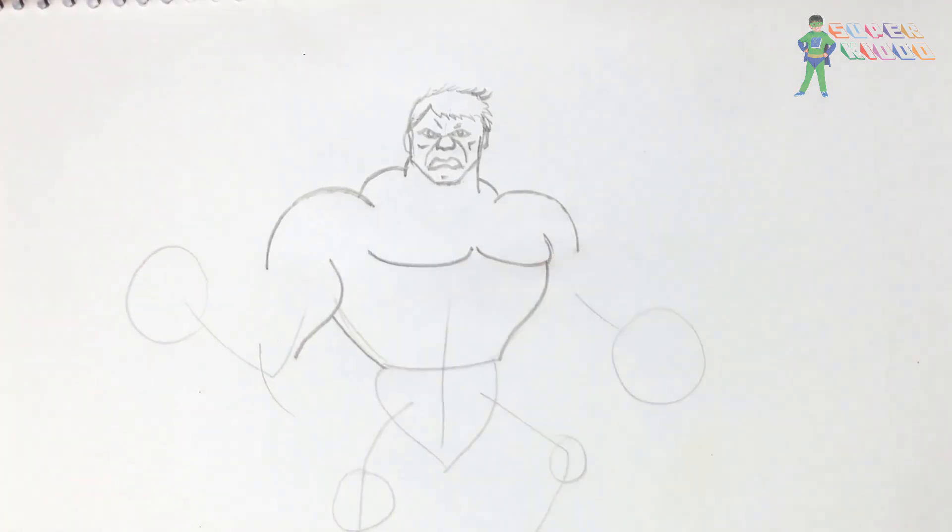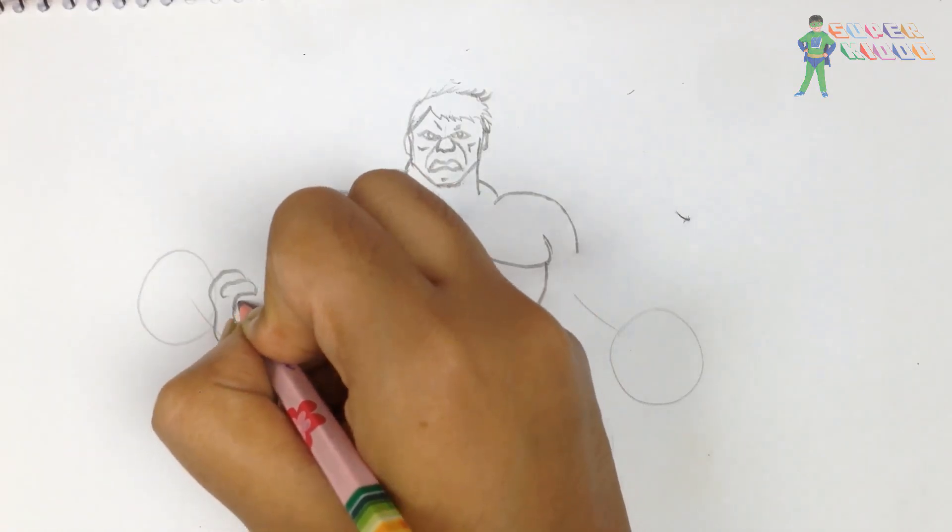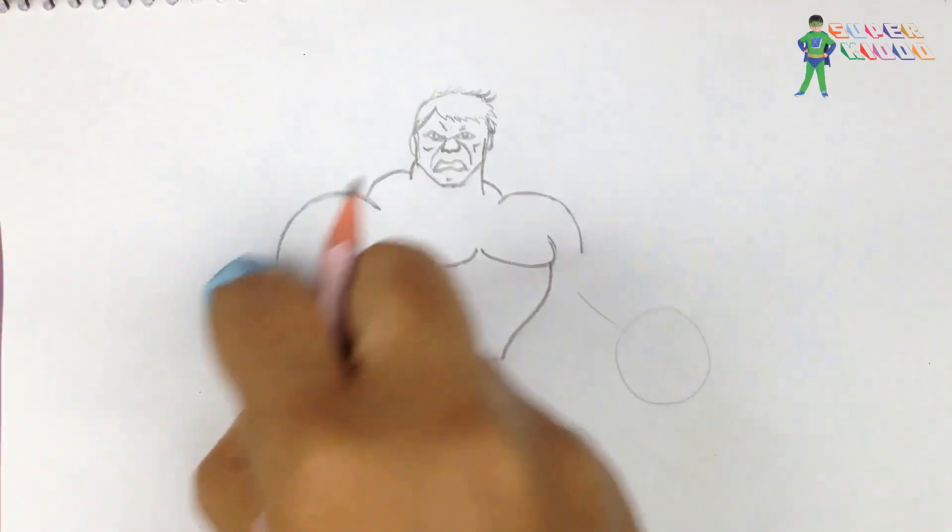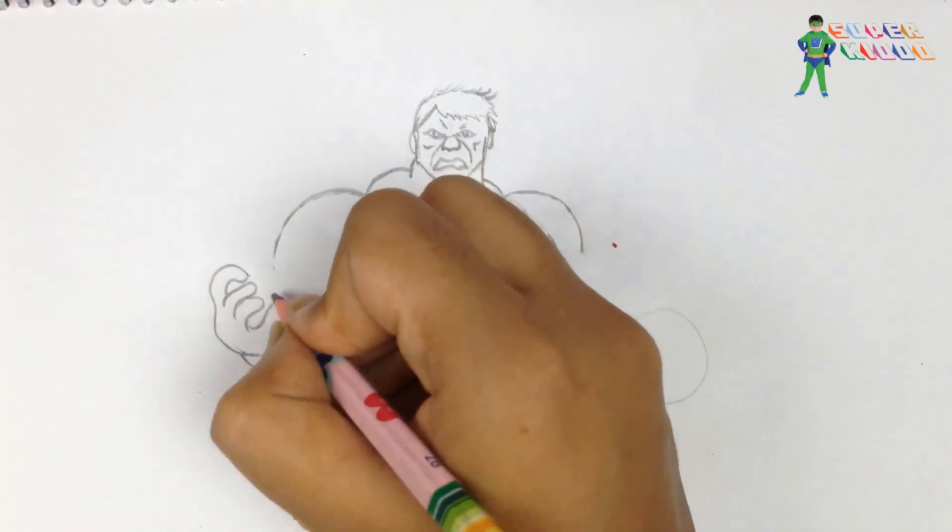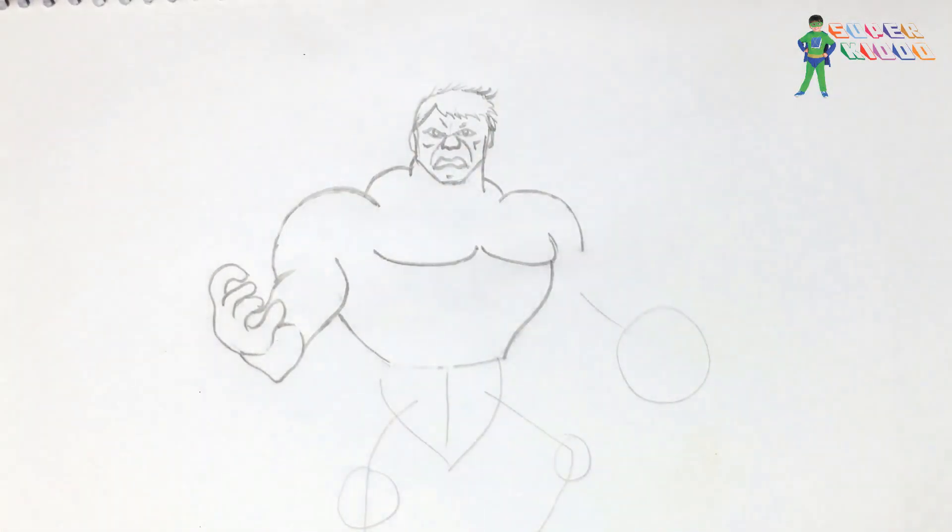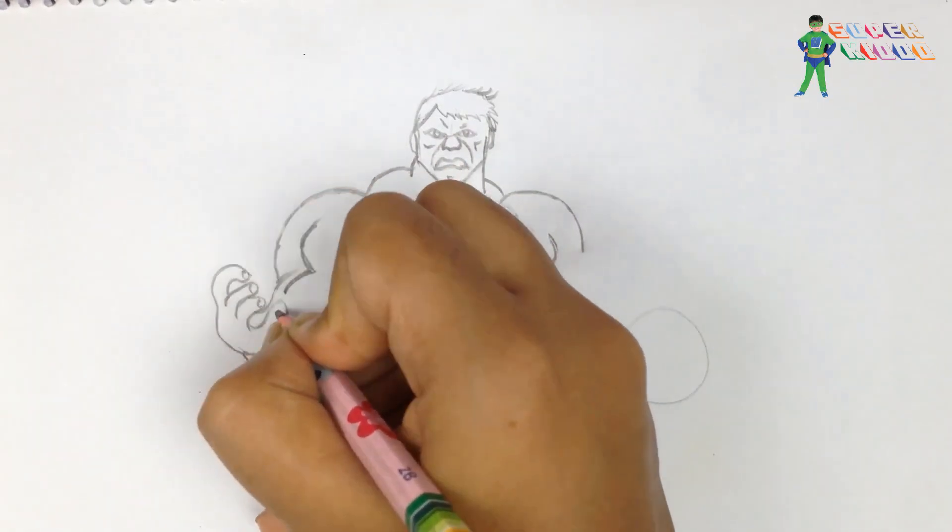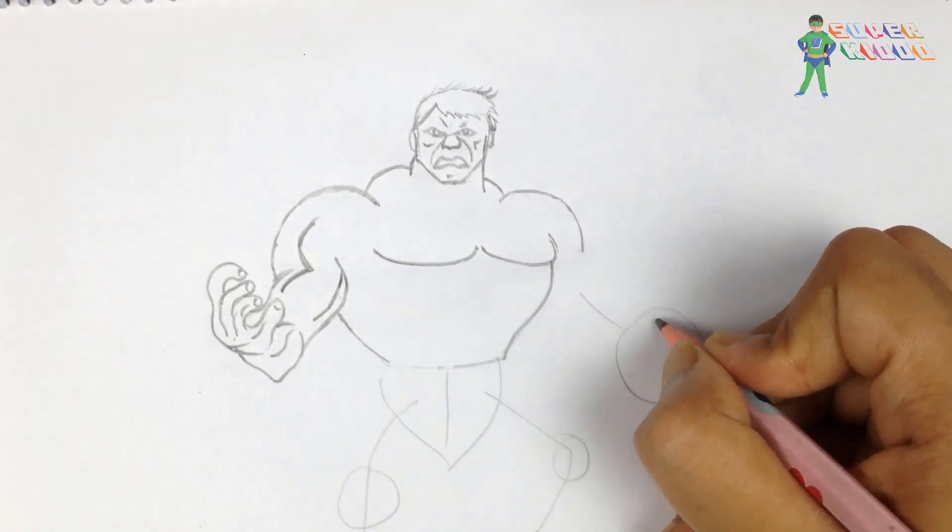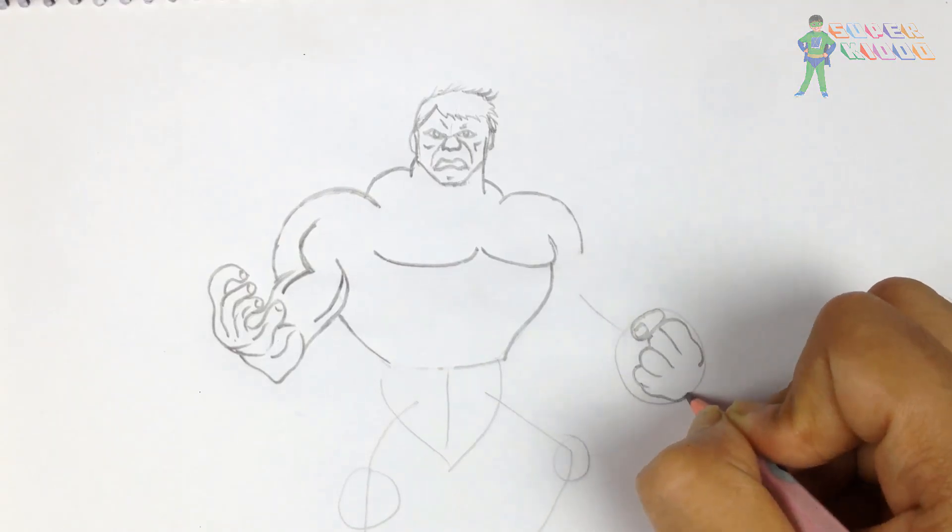Wow, look at his body. Just drawing his muscles and furious hand. Okay, one hand is done. And here's another hand and it's a strong fist.